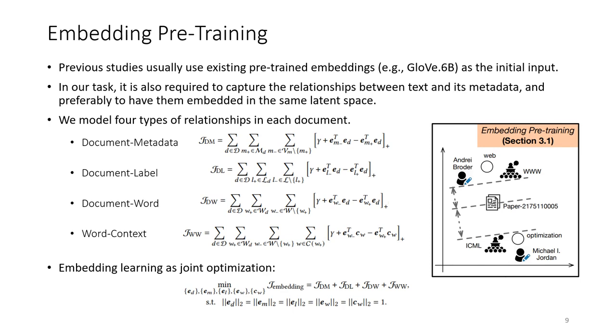The first module is metadata-aware embedding pretraining. Previous studies usually use existing pretraining embeddings, for example, GloVe and Word2Vec, as the initial input because they only consider text in text classification. However, in our task, it is also required to capture the relationships between text and its metadata, and preferably to have them embedded in the same latent space.